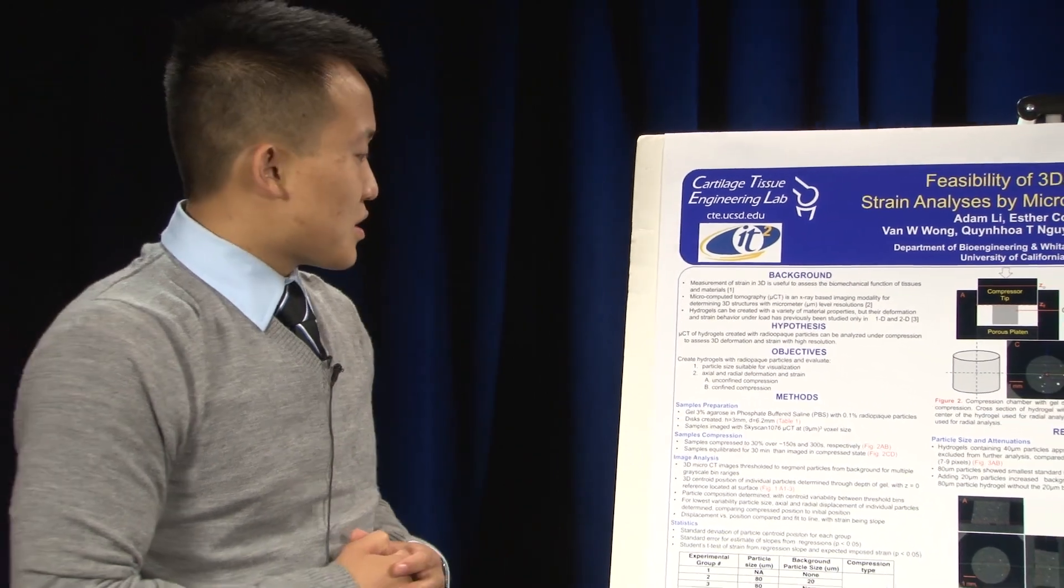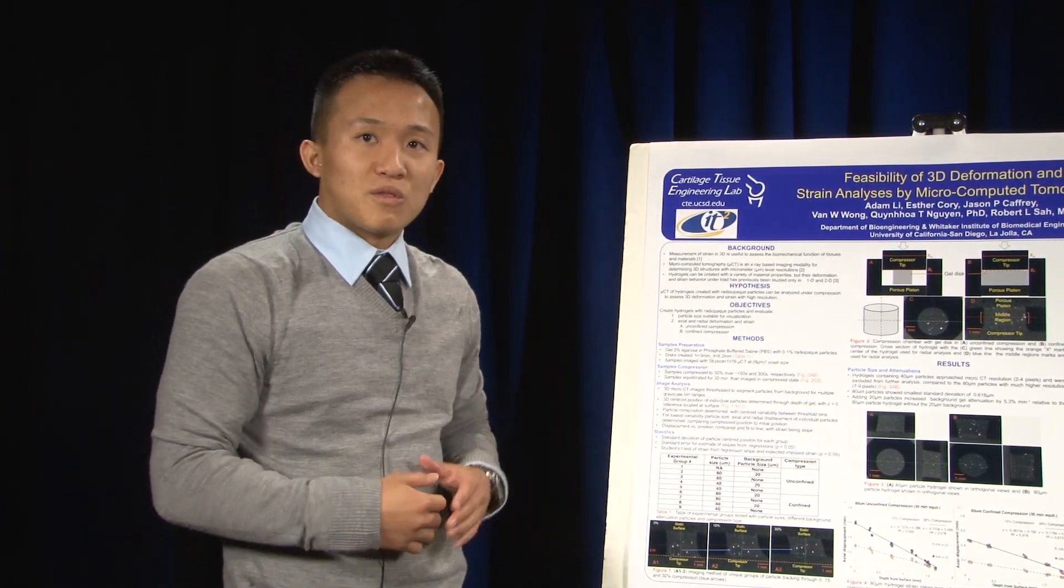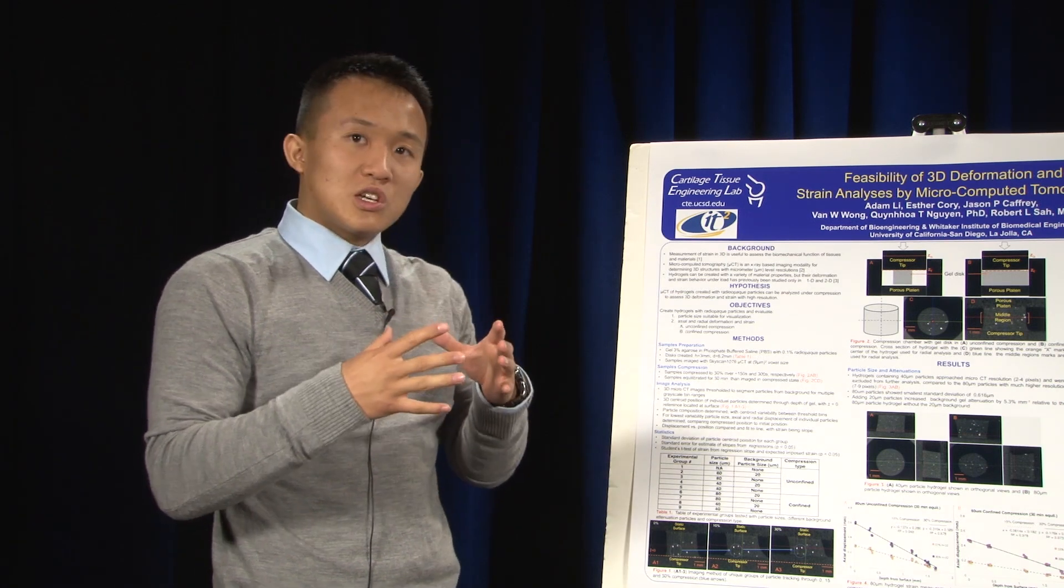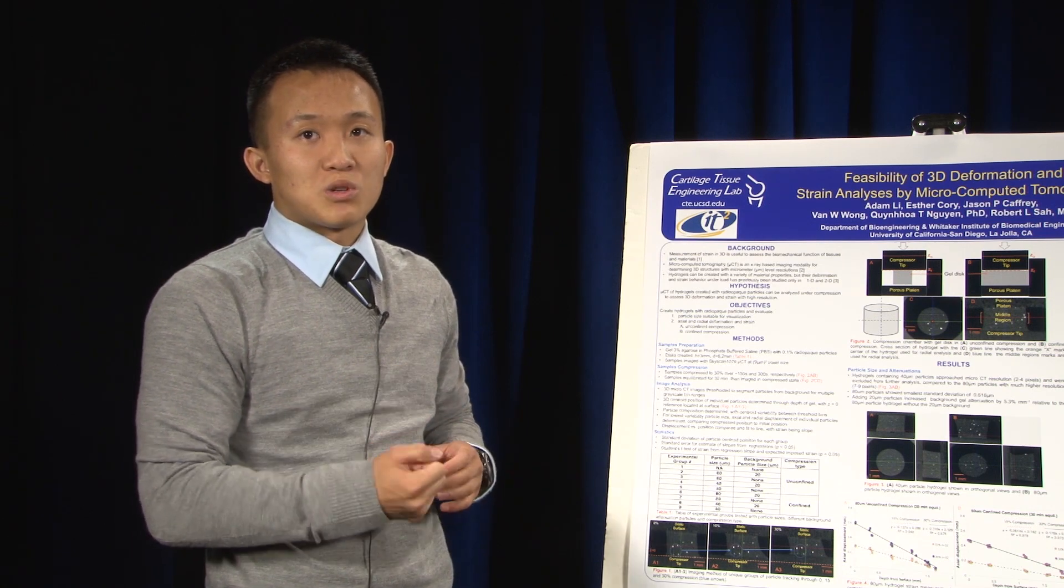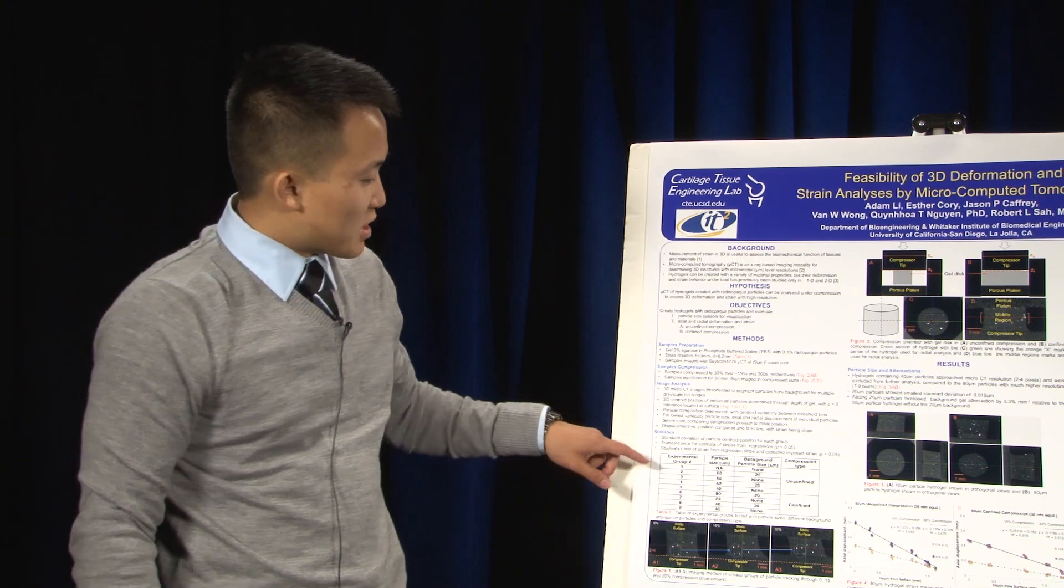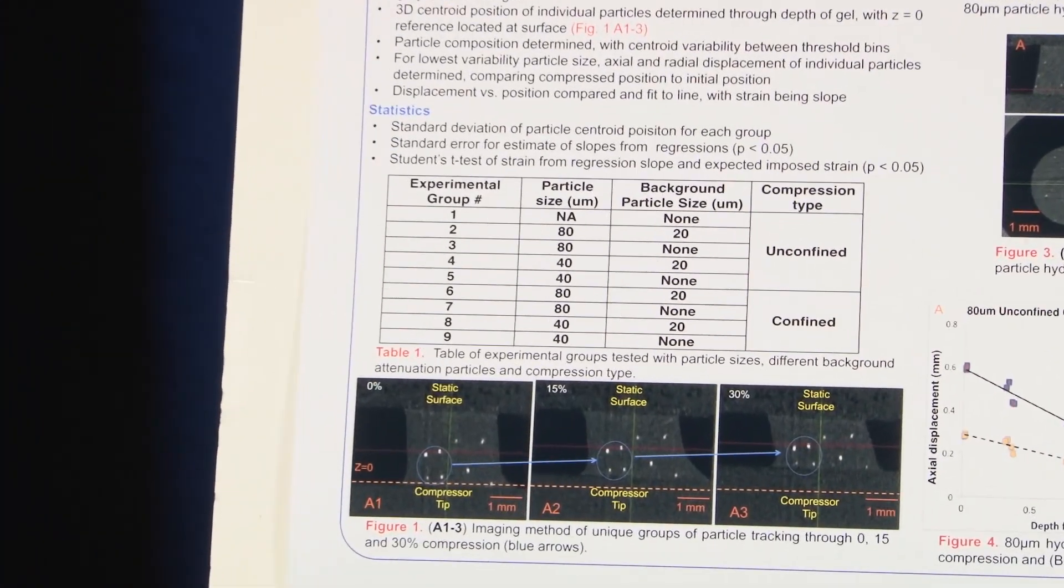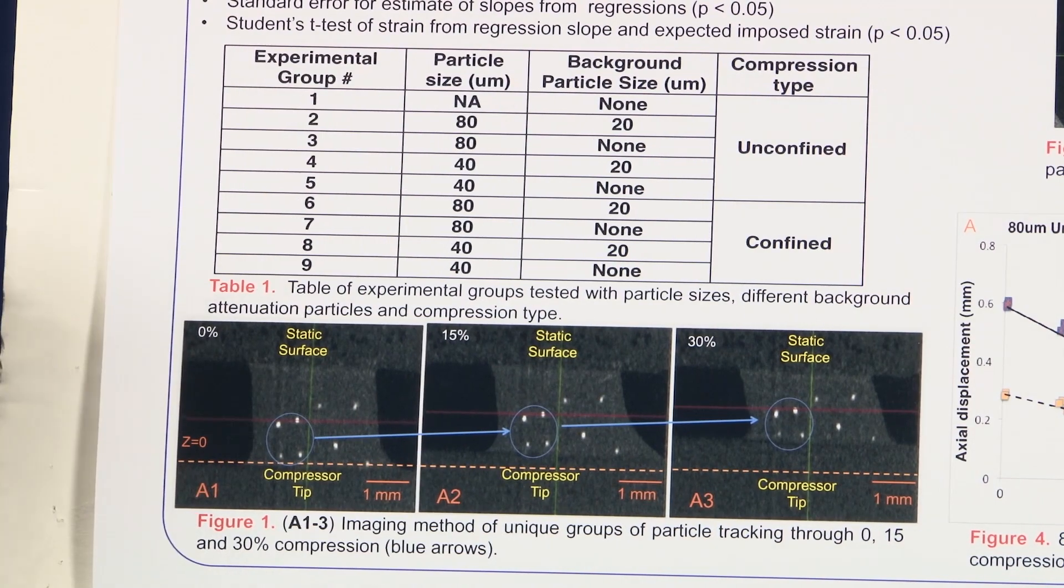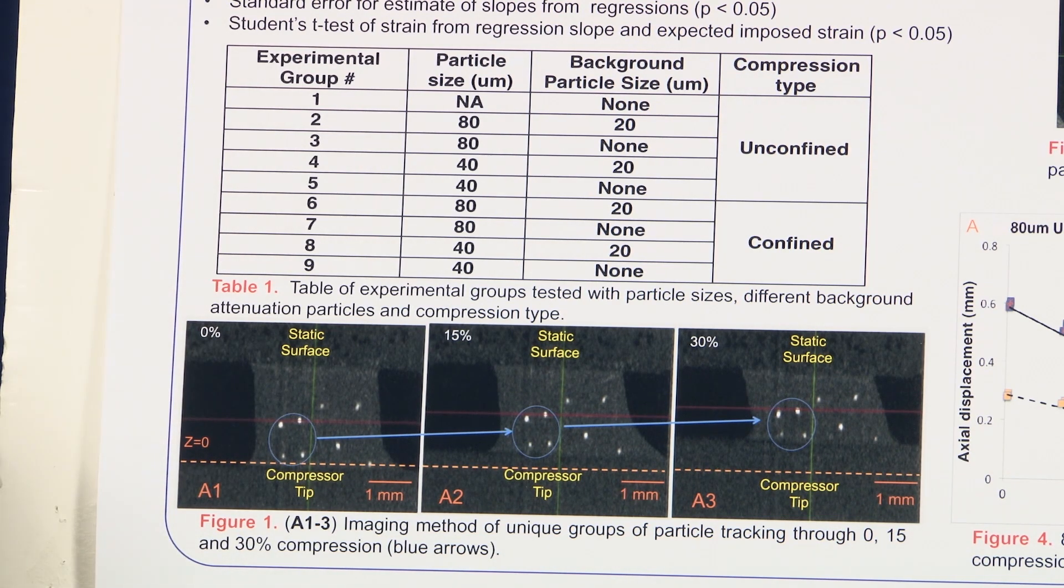In order to test these objectives, first we started with creating the hydrogels. Our hydrogels were created with 3% agarose in phosphate buffered saline with 0.1% radio opaque particles. The gels were essentially created into disks with a height of 3 millimeters and either a diameter of 3 millimeters or 6.2 millimeters depending on the compression type. As you can see in Table 1, these were all the experimental groups that we tested with particle size, background particle size, and compression type. The samples that we compressed, we compressed to 30% over approximately 150 seconds and 300 seconds respectively for both 15% and 30% compression. Basically we performed two compression steps.